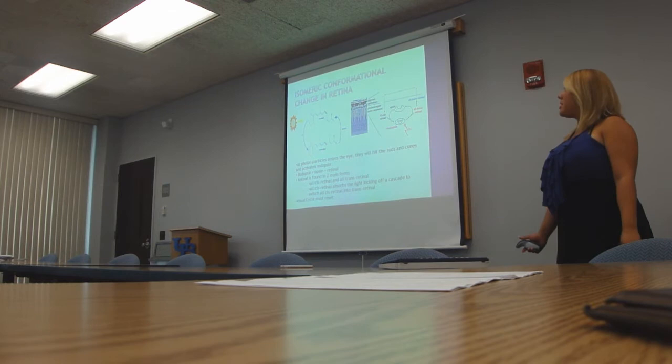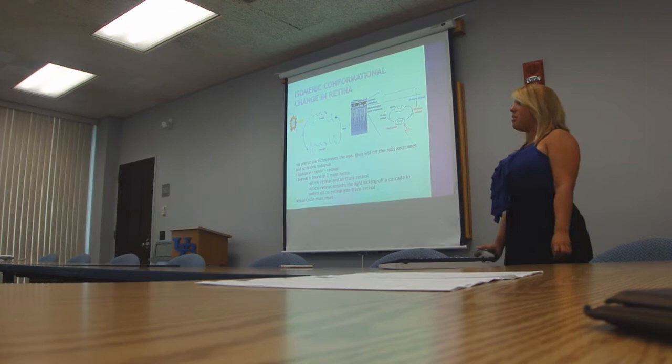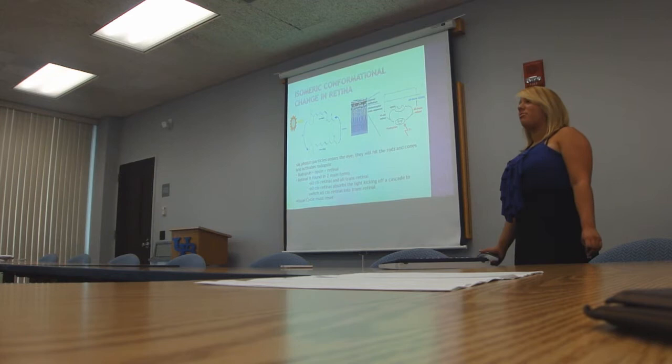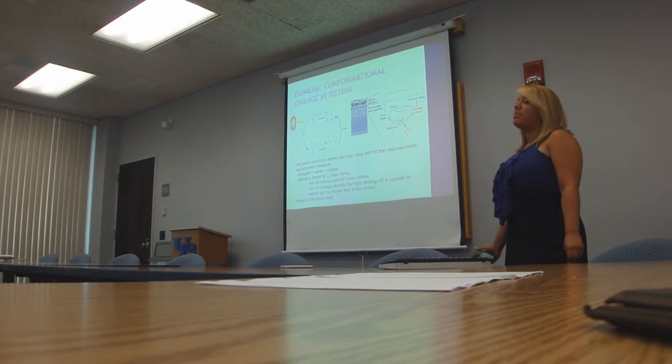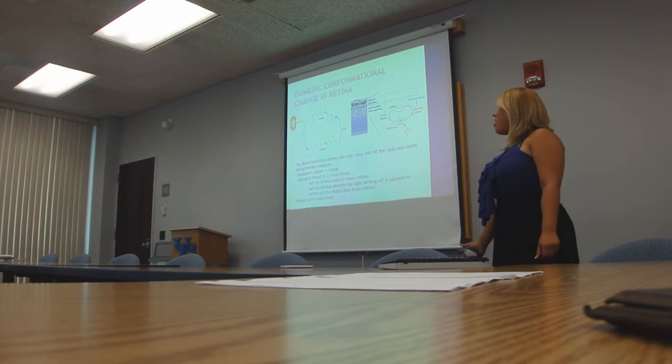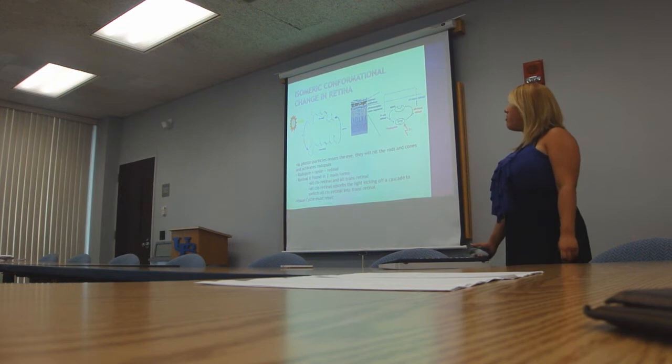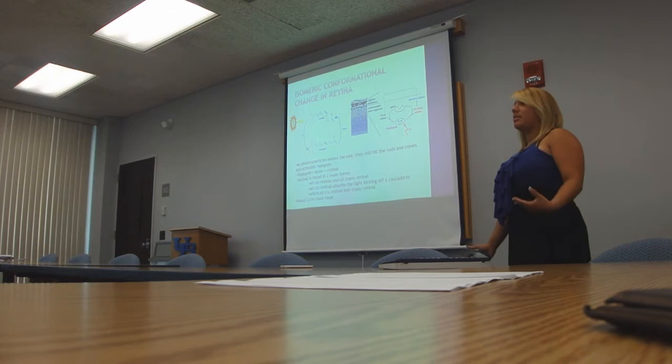The basic key point in the visual cycle is the isomeric conformational change that occurs in the retina between all-cis and all-trans retinoids. The first step of the visual cycle is when photons enter the eye and hit the rods and cones, activating rhodopsin. Rhodopsin is a protein composed of opsin and retinol. The all-cis retinol absorbs the light and kicks off a cascade that will isomerically conform all of the all-cis retinol into all-trans retinol. In order to see the next image, you need to reset the cycle.